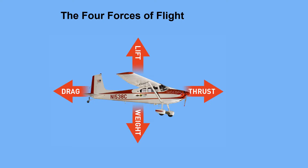There are four main forces affecting an aircraft in flight: thrust, drag, lift, and weight, where thrust opposes drag and lift opposes weight. For an aircraft to accelerate, thrust must be greater than drag, and to decelerate, drag must exceed thrust. For an aircraft to climb or gain altitude, lift must exceed weight, and to descend, weight must be greater than lift.